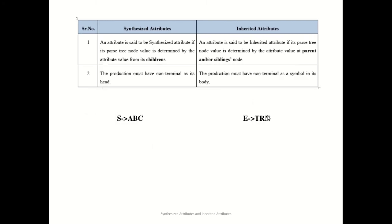The second difference is that in synthesized attributes, the production must have a non-terminal as its head — for example, S → ABC, where S is a non-terminal. Whereas in inherited attributes, the production must have a non-terminal as a symbol in its body. This is because, as seen in the previous example, R is getting value from T as well as from N, which are in the body of the production. So all non-terminals should be present in the body of the grammar.